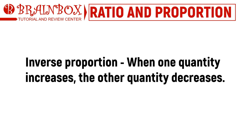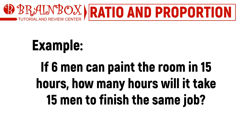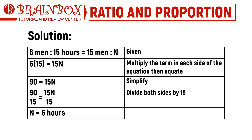This shows an inverse relationship in some quantities. For example, if six men can paint the room in 15 hours, how many hours will it take 15 men to finish the same job? We can denote the number of hours as n. This relationship can be expressed as 6 men is to 15 hours as 15 men is to n. In solving inverse proportions, instead of multiplying the extremes and means, we multiply the terms on each side of the equation. Dividing both sides by 15 gives us n equals 6 hours. It will take 6 hours for 15 men to paint the room.